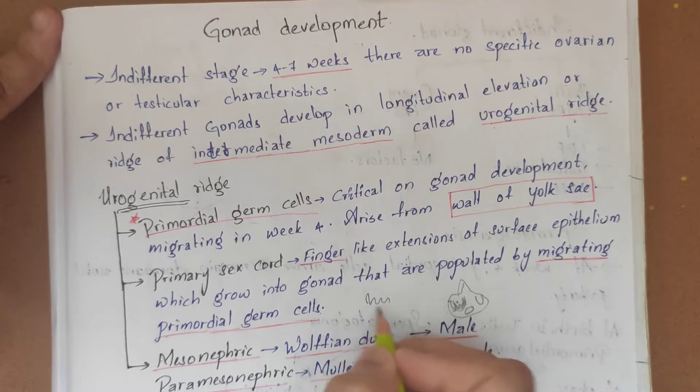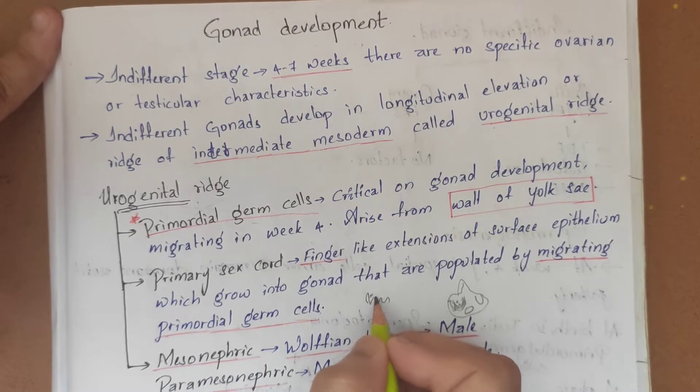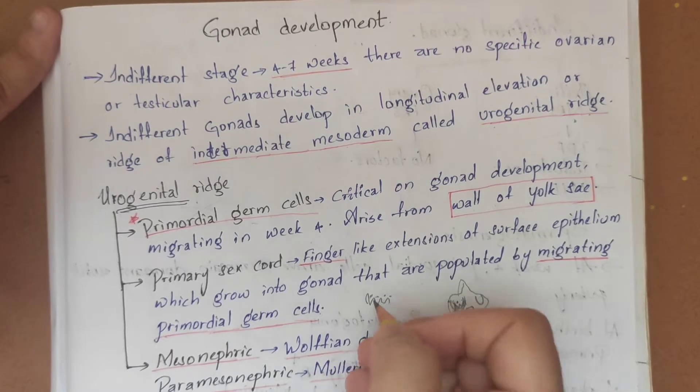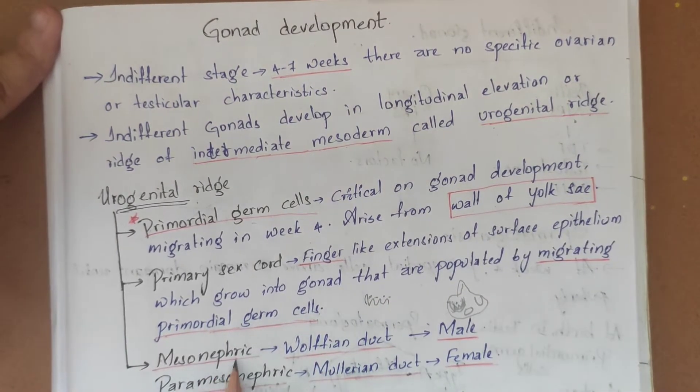The third component is mesonephric or paramesonephric ducts.